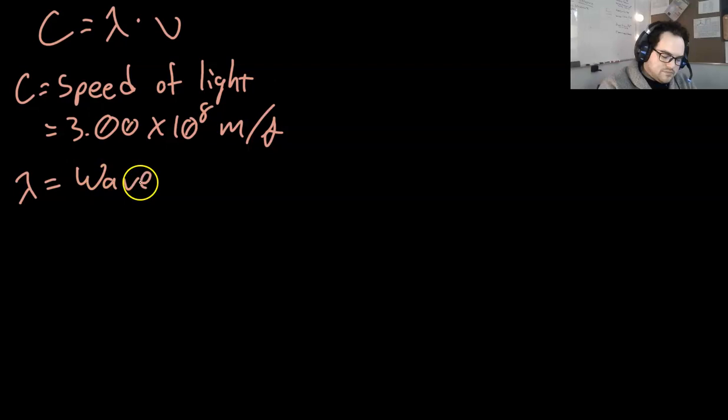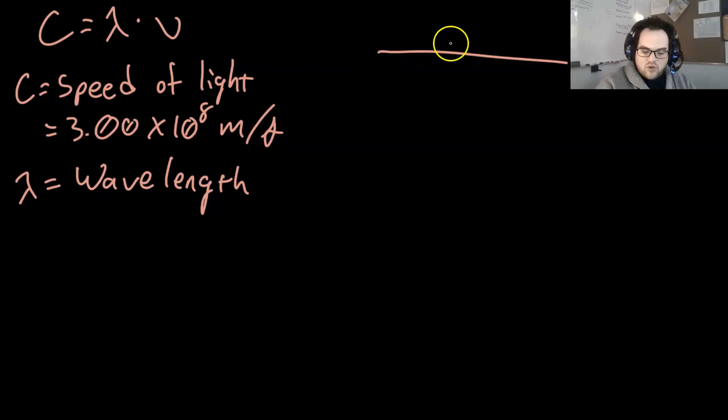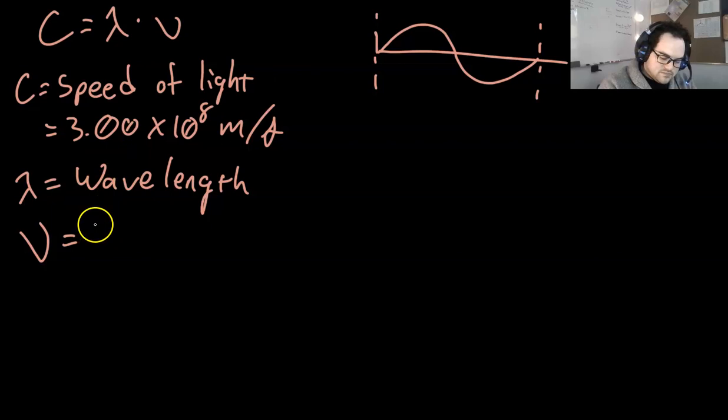3.00 times 10 to the 8th meters per second. And that will never change. Lambda is wavelength, or the distance. If you have a wave, it's the distance from the start of one wave to the start of the next. And nu is frequency, or how often a wave occurs within a second.